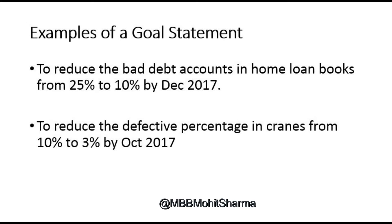A goal statement should start with phrases like 'to reduce' or 'to improve,' and should include a 'from and to' statement. For example: to reduce bad debt accounts in home loan books from 25% to 10% by December 2017. This has the action phrase, the from-and-to range, and the target date — making it a complete SMART goal statement.